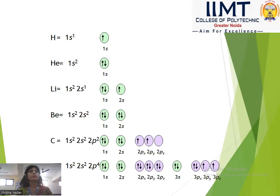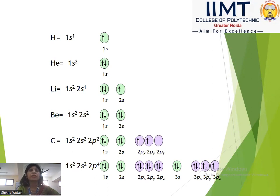Next we have carbon: 1s², 2s², 2p². Two electrons in 1s, 2 electrons in 2s, and the 2p electrons are distributed as 2px¹ and 2py¹.